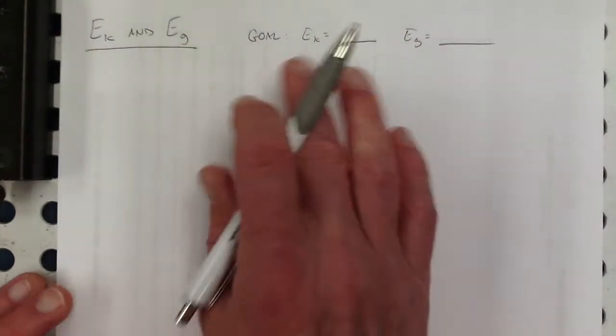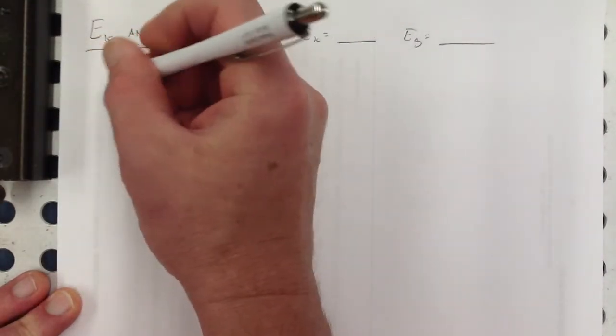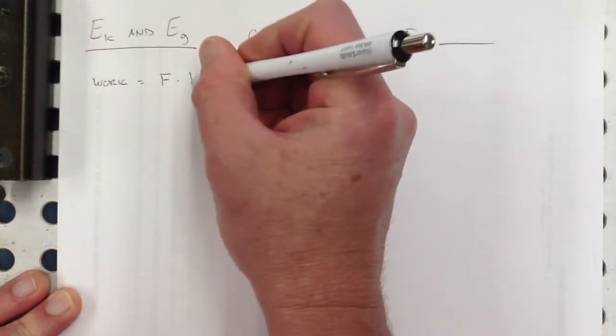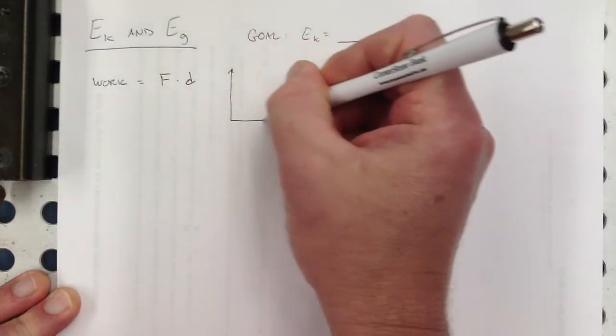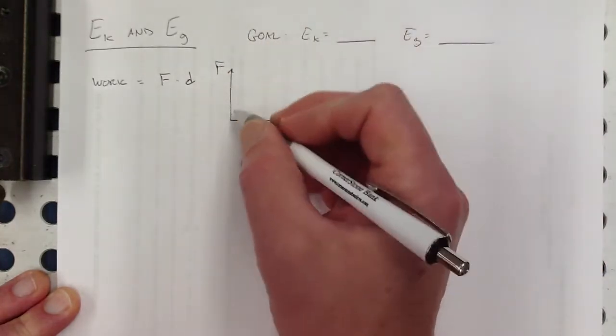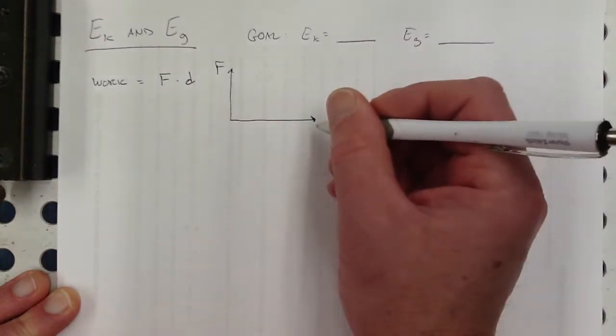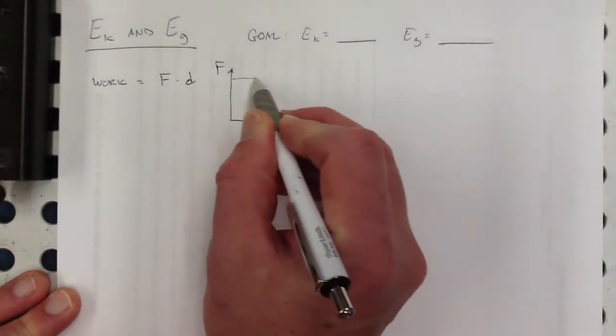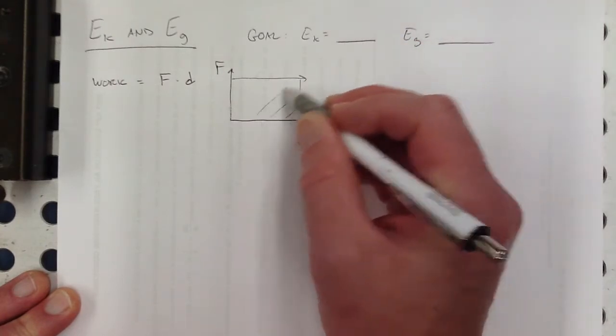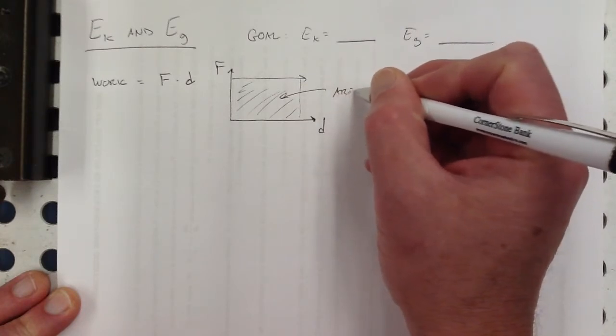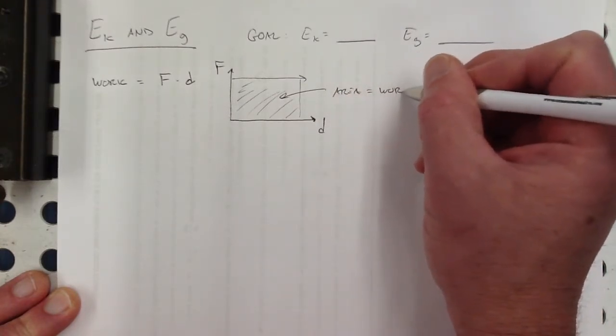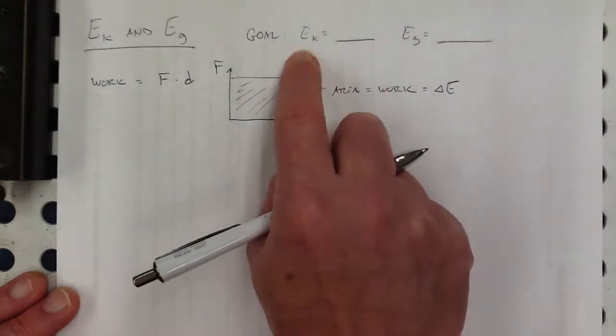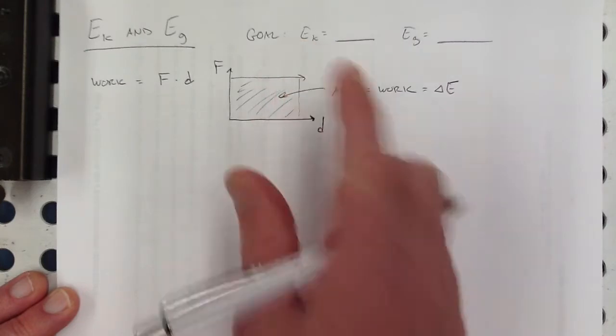So here's what we need to remember first before we can get there. Remember that work is equal to force applied over a distance, and that we can visualize that when we had like the force of a spring, for example, we had that straight line, and we found the area under that, and that got us our E_E expression, right, one-half kx squared. In general, if you've got some kind of force, you could think of that area right there is equal to work.